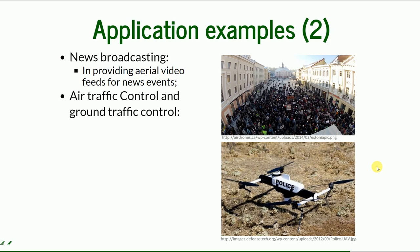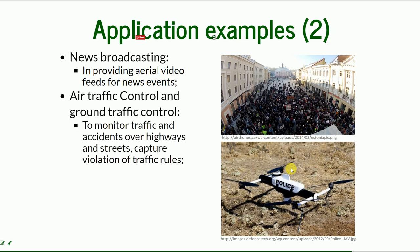There's also air traffic control and ground traffic control. You can see here a little police drone — in areas where you cannot get through by car because of traffic, you can monitor that traffic by flying with the drone. You can also monitor air traffic this way, and over highways it can be used to capture violations of traffic rules.